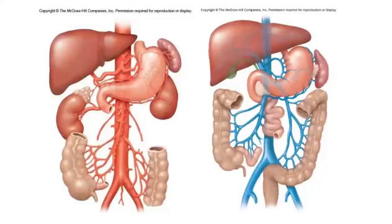We have the hepatic portal vein, which is carrying potentially toxic blood from gut structures into the liver capillaries for filtration. And then we had the proper hepatic artery, which is carrying fresh, oxygen-rich blood into the liver so that the liver can function.